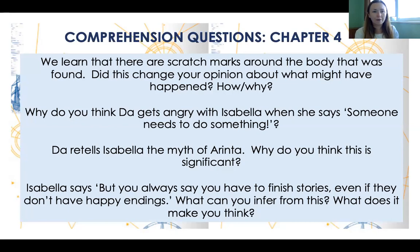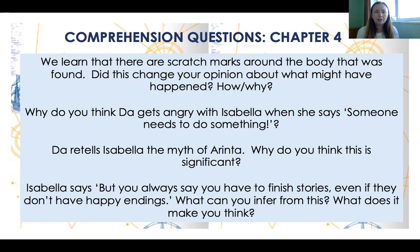Why do you think Dar gets angry with Isabella when she says someone needs to do something? There are a lot of mixed emotions here and characters being torn between different opinions. Listen to or re-read that section again, think about what else is going on, things that have happened in the past, his position as her father, and the situation they're in. We get the impression this isn't something that happens a lot — so why does he in this instance?